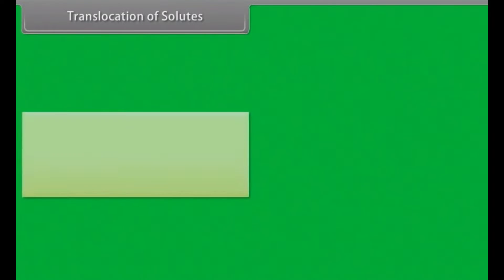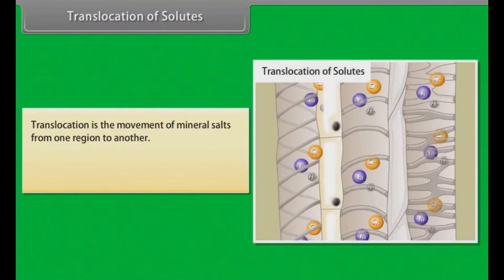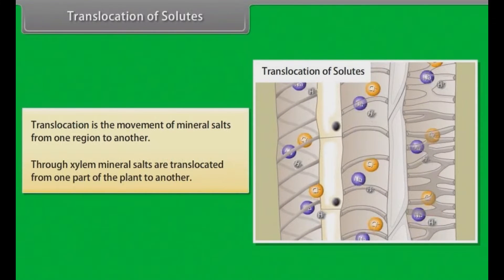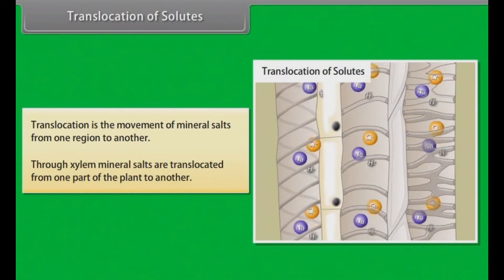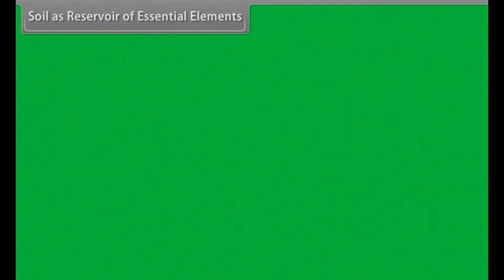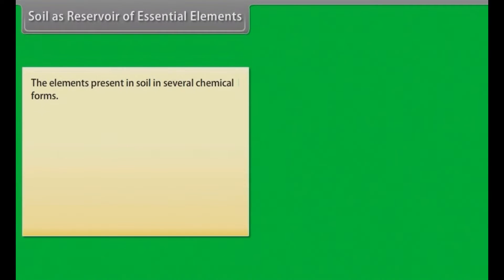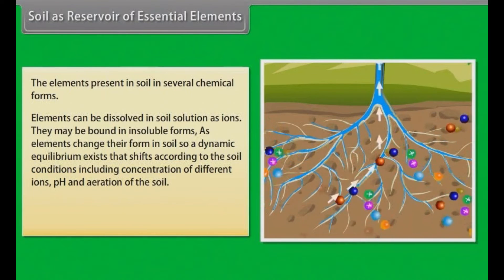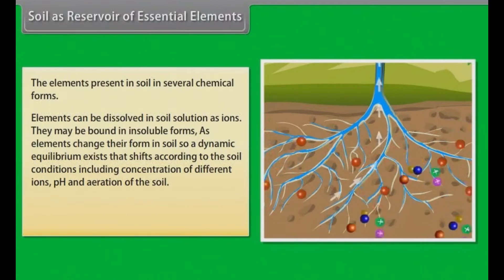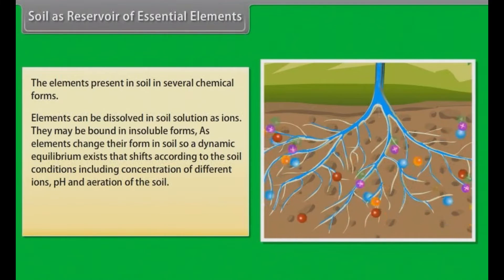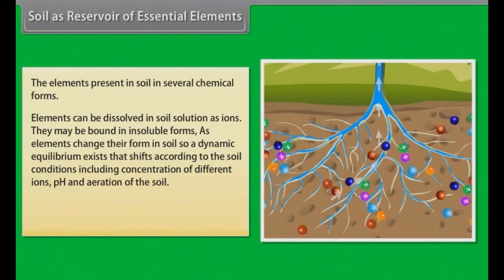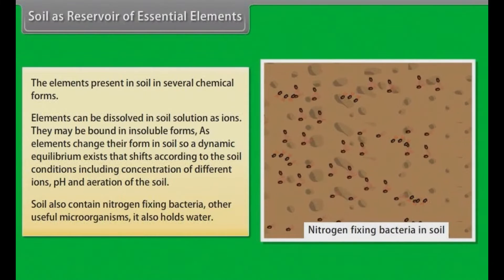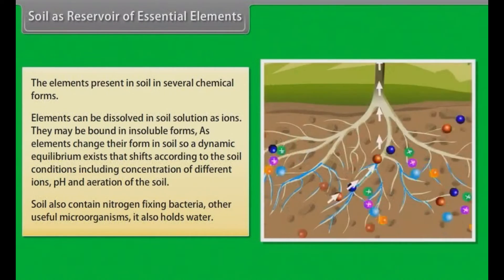Translocation of solutes is the movement of mineral salts from one region to another. Through the xylem, mineral salts are translocated from one part of the plant to another. The soil serves as a reservoir of essential elements in several chemical forms; elements can be dissolved in soil solution as ions or bound in insoluble forms. A dynamic equilibrium exists that shifts according to soil conditions including ion concentrations, pH, and aeration. Soil also contains nitrogen-fixing bacteria and other useful microorganisms, and holds water.